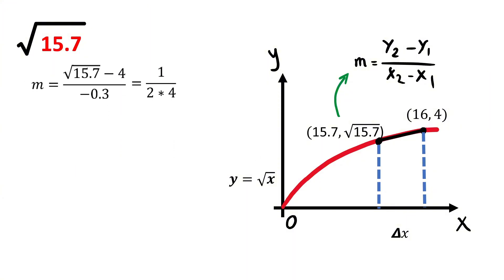Now, let's go further. If we multiply both sides of this equation by minus 0.3, we get minus 0.3 over 2 times 4 for the right side. And if we do this division, we get minus 0.03 for the right side. Now, I move 4 to the right side of the equation. So I get 4 minus 0.03, which is equal to 3.97.